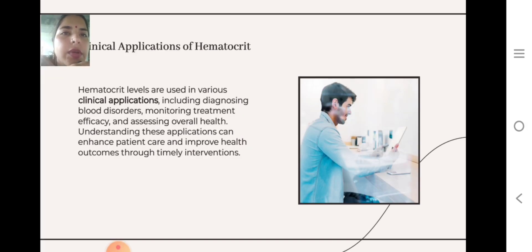Clinical Applications of Hematocrit. Hematocrit levels are used in various clinical applications including diagnosing blood disorders, monitoring treatment efficiency, and assessing overall health. Understanding these applications can enhance patient care and improve health outcomes through timely interventions.